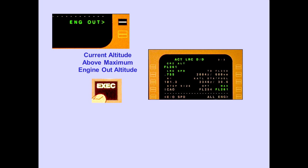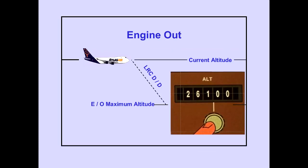The FMC automatically sets the cruise altitude line to the maximum engine-out long-range cruise altitude and the engine-out long-range cruise speed is displayed. The airplane will maintain current altitude; airspeed will decrease until a descent is initiated. Setting a lower altitude in the MCP altitude window and pushing the altitude selector deletes the current altitude constraint and initiates a long-range cruise drift-down. The airplane descends to the maximum sustainable altitude using maximum continuous power.